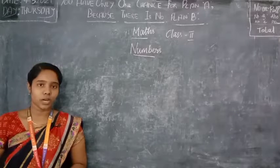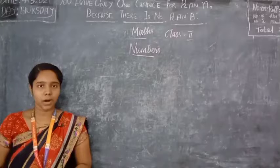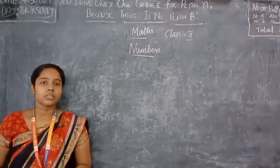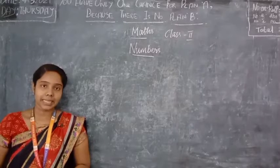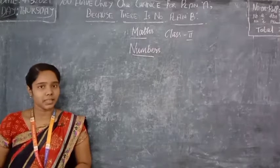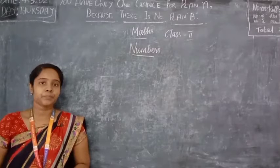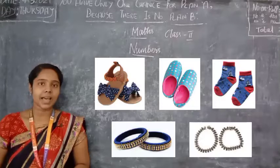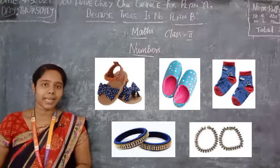Now let us move on to today's class. In our earlier classes, you must have studied about the concept of pairs. So what are called as pairs? Certain things in our life we use in pairs — we buy them in pairs from shops. For example, see this picture. You will buy certain things like slippers, shoes, socks, bangles, and anklets in pairs.